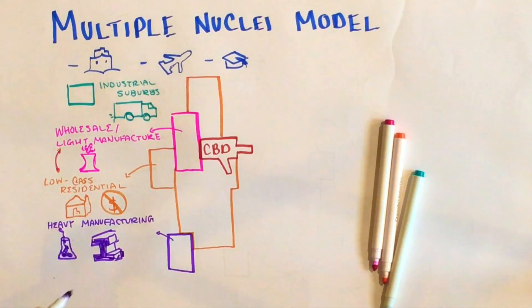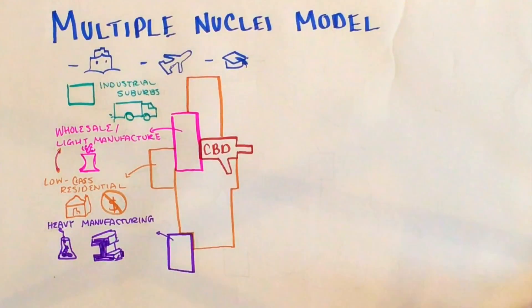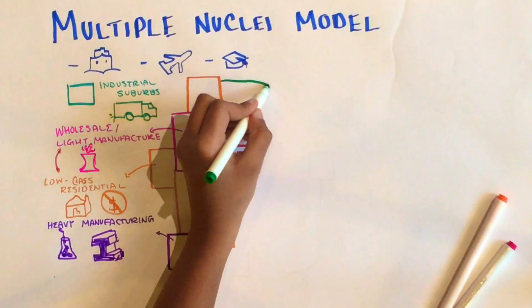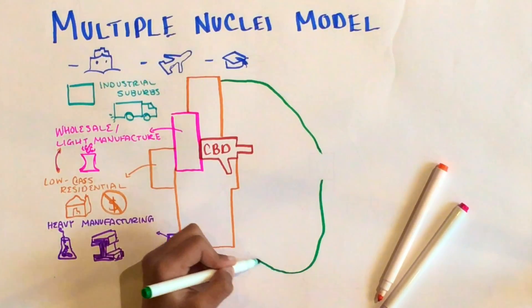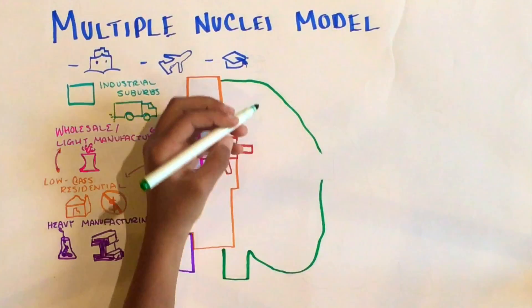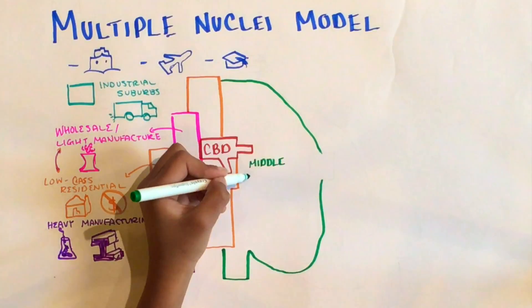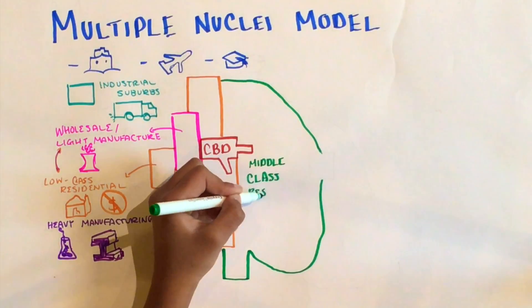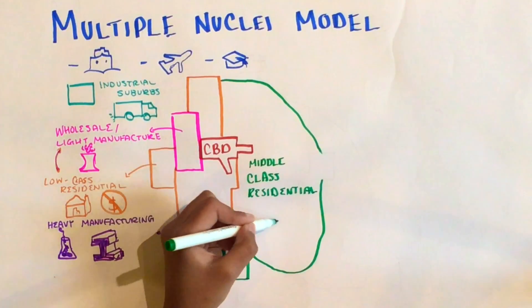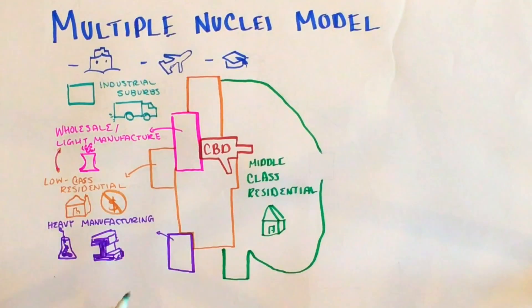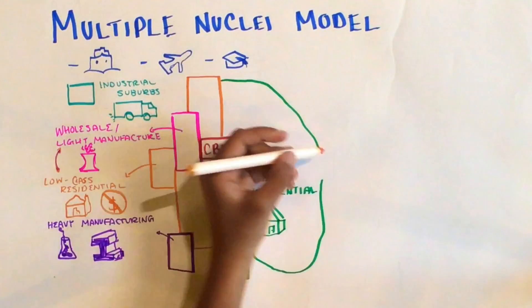After the heavy manufacturing district would be the second category, the medium-class residential. This is the largest part of the residential area, as most would fall into this category. The houses in this district would also be nicer than those in the low-class residential, but also less nice than those in the high-class residential.